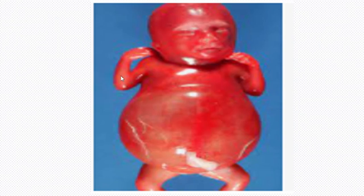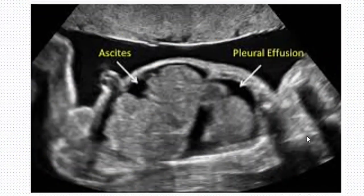The fetus can have edema or fluid just below the skin. You can also have fluid around the scalp accumulating when a fetus has this condition, called hydrops fetalis. This is a sonographic image demonstrating a typical case of hydrops fetalis. We can see the gravid uterus, this is our placenta — an anterior upper segment placenta — and this echogenic layer is our chorionic plate.